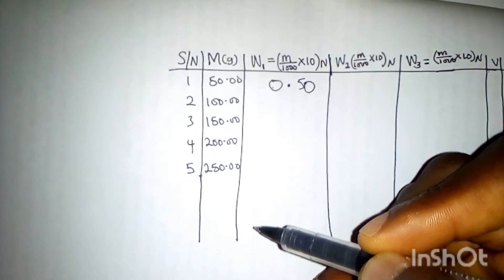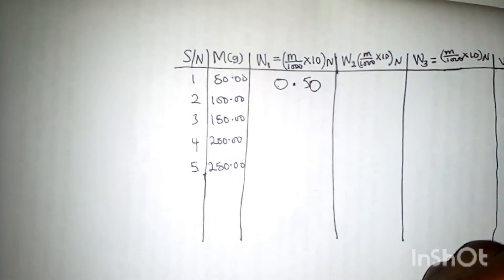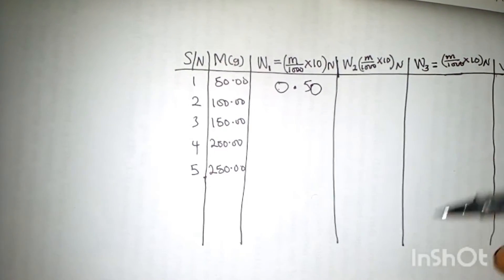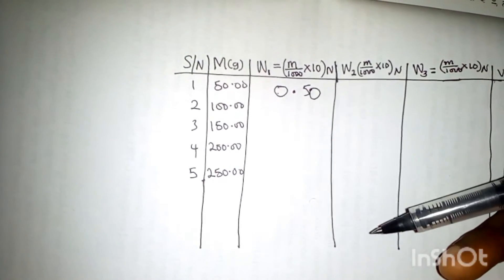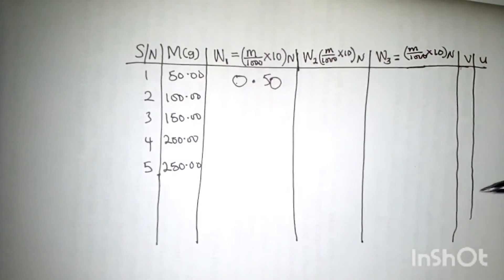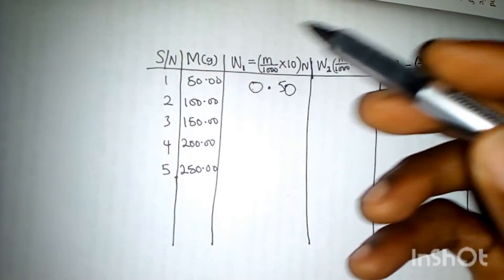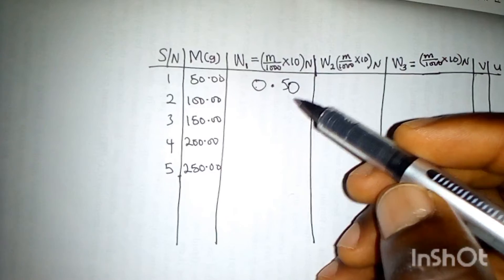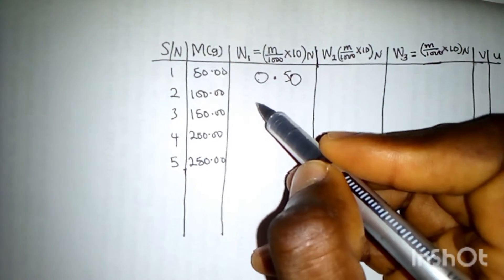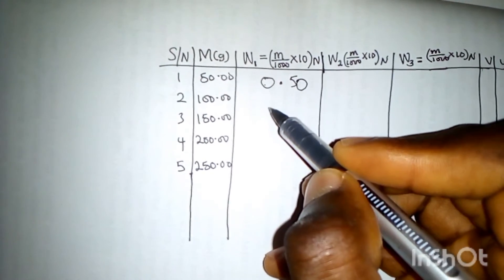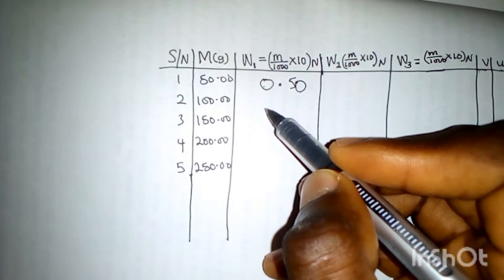The same thing happens to the rest. This should be recorded in two decimal places, except U and V which have to do with evaluations - those should be in three decimal places. For 100 grams, that's going to give us...